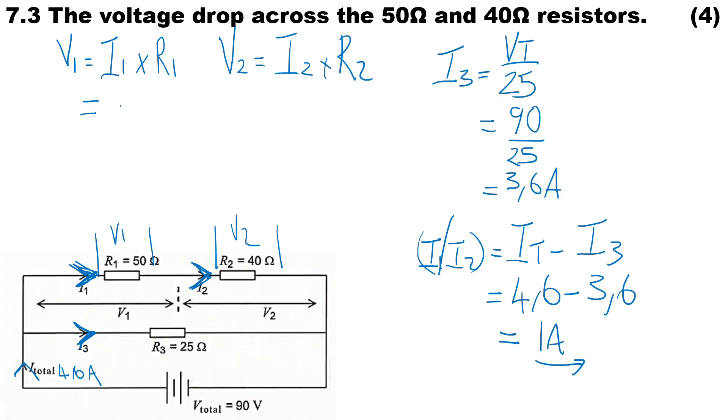Now we can go ahead and substitute. I1 is 1 amp, R1 is 50 ohms. Same thing here: I2 is 1 amp and R2 is 40 ohms. So the voltage drop across R1 is 50 volts, and the voltage drop across R2 is 40 volts. Thanks very much for watching this video.